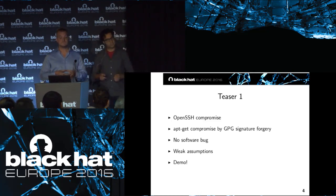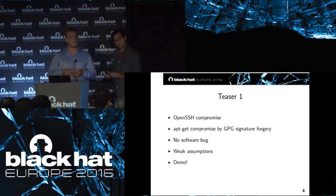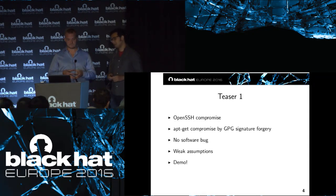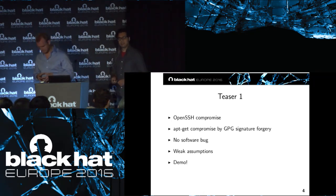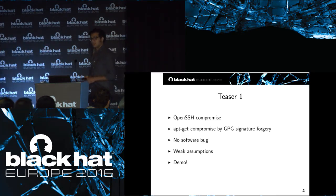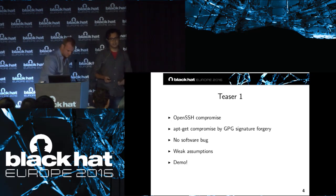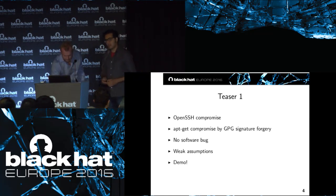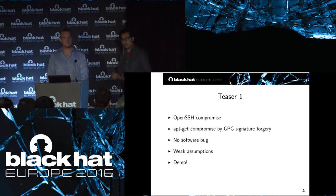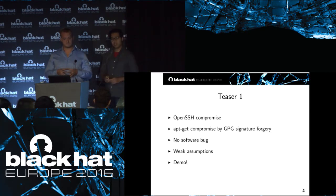We're going to show you how you can use memory deduplication to manipulate physical memory of a victim VM to make targeted Rowhammer bit flips, and how you could use this to compromise OpenSSH. We'll also show how Flip Feng Shui can compromise apt-get and forge GPG signatures so a victim VM installs packages without realizing they shouldn't. None of these rely on any software bug — only a hardware glitch. If you have a vulnerable DIMM, which is quite common — about 90% of DIMMs sold today are vulnerable to Rowhammer — and memory deduplication turned on, you're already vulnerable to Flip Feng Shui.